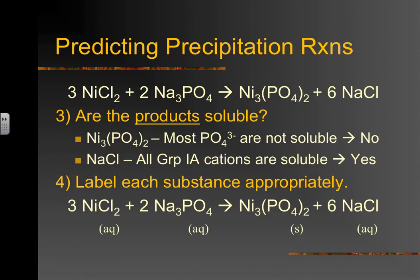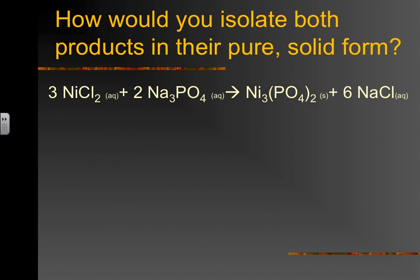This is how the final completed reaction looks with all phase labels — aqueous or solid. A follow-up question you'll see in homework: how would you isolate both products in their pure solid form? You'd take the nickel(II) chloride solution and sodium phosphate solution, mix them, and when the reaction is done, solid nickel(III) phosphate sits at the bottom of the beaker while sodium chloride is dissolved in the watery portion. How do you isolate both completely pure, with no water?